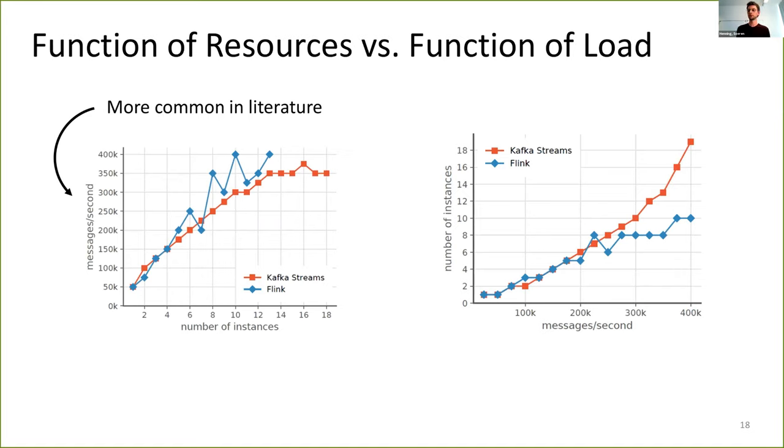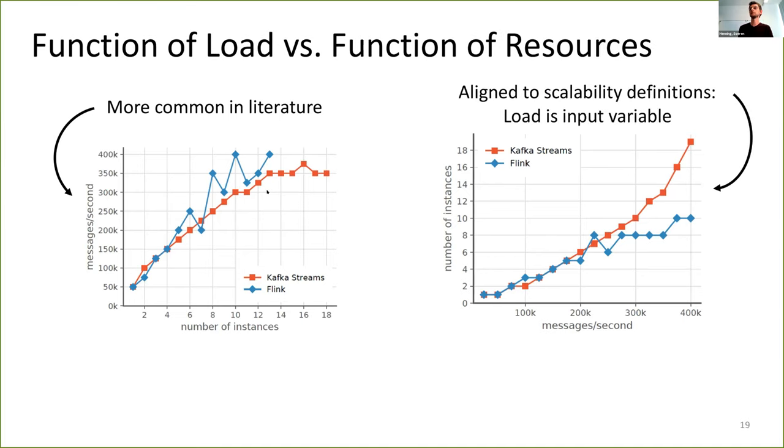So we have two metrics and one could ask, why? Why do we need two metrics? The reason for that is that if we look at the load capacity metric, we see that such a metric is way more common in literature. Scalability is evaluated as a function of resources. On the other hand, evaluating scalability as a function of load is way more aligned to scalability definitions. Because in the definition scalability is described as that load is the thing which is increasing. And we study how the system behaves with increasing load and not with increasing resources.